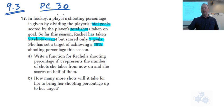So part A says write a function for Rachel's shooting percentage if X represents the number of shots she takes from now on and she scores on half of them. This is the section on rational functions. X is the number of shots that she takes from now on, and she's going to score on half of them. Let's work over here a little bit.